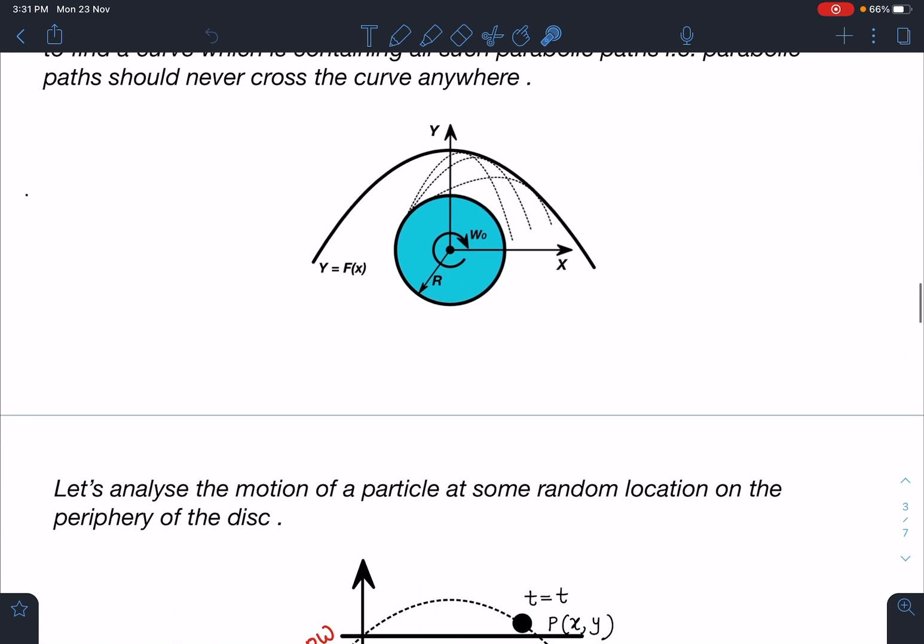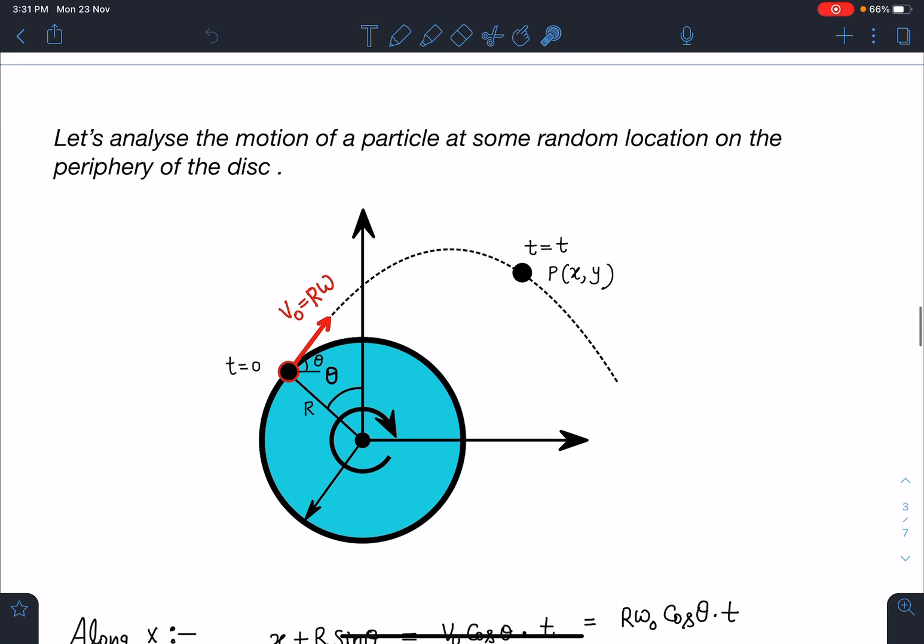What I'm going to do is analyze the motion of a particle which is at some random location, and that random location I'm choosing at some general θ here. So it will include all the particles which are present on the periphery of this disc. The initial velocity with which this particle will leave the disc is going to be Rω₀.